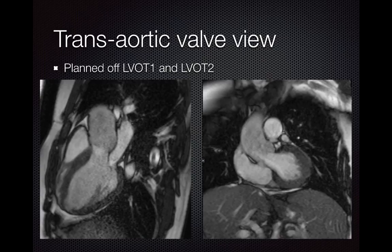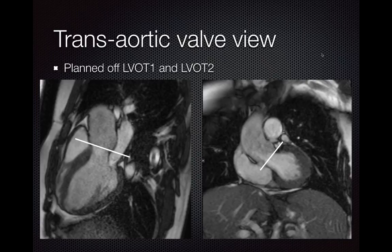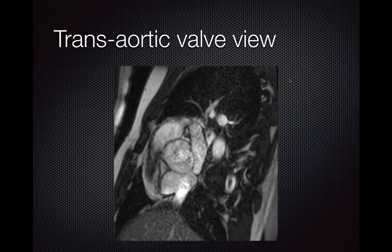Using these two LVOT views, we set up the trans-aortic valve view. This requires a double oblique view to see the aortic valve en face. We line up along the plane of the aortic valve on LVOT1 and along the plane of the aortic valve on LVOT2. This gives us a nice en face view of the aortic valve — in this case a bicuspid aortic valve with a fish mouth configuration — with the aorta and leaflets clearly visible.